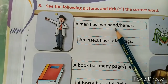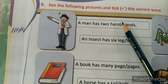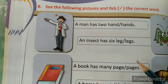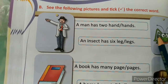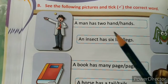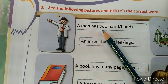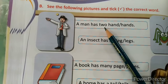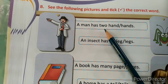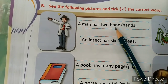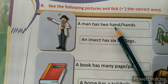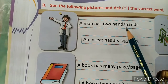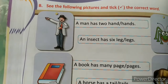Now let's read: 'A man has two hands' — the slash here is called oblique — or 'hands'. So 'a man has two' — here two is written, which means more than one. So 'hands' should be written. Tick on 'hands'.